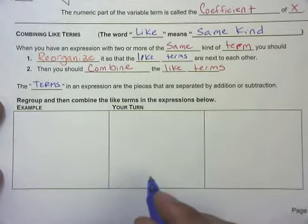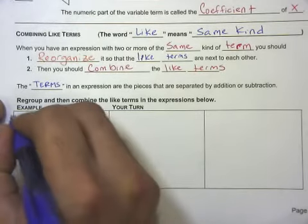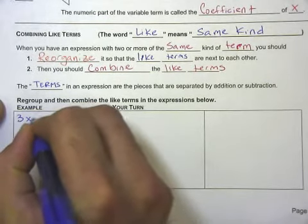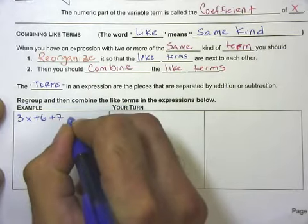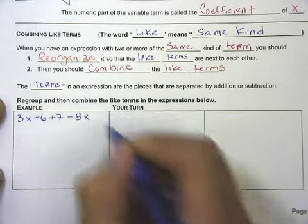Alright, here's a quick example of combining like terms. We've got 3x plus 6 plus 7 minus 8x.